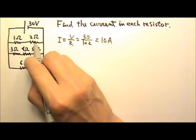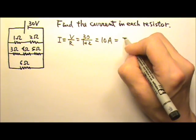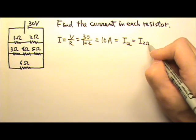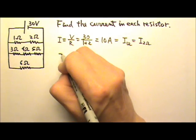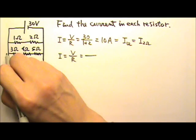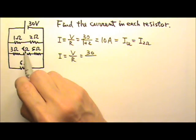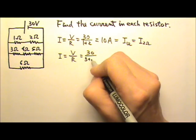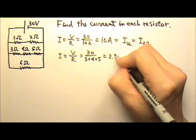And because they are in series, they get the same current. So 10 amps is the current through the 1 ohm and also through the 2 ohms. For the second segment, the current is V over R. The voltage for this entire segment is 30 volts, and we have 3, 4, and 5 ohms in series. So the total resistance is 3 plus 4 plus 5, giving us 2.5 amps.